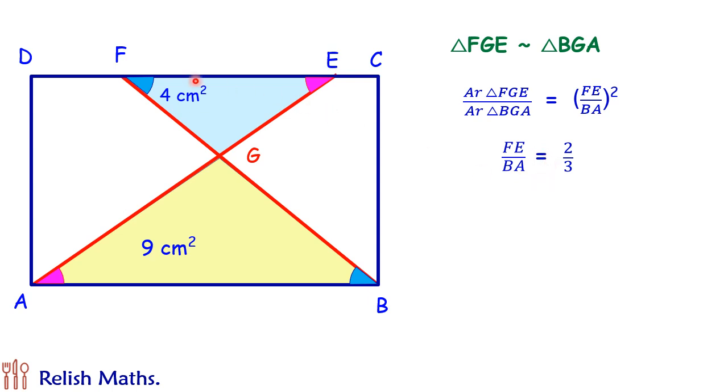That is if the side FE is 2X then the length of side AB will be 3X. Also in these two similar triangles if the side ratio is 2 is to 3, then the ratio of median, ratio of altitudes, every corresponding ratio will be 2 is to 3. So here if this height is 2H then this height will be 3H.